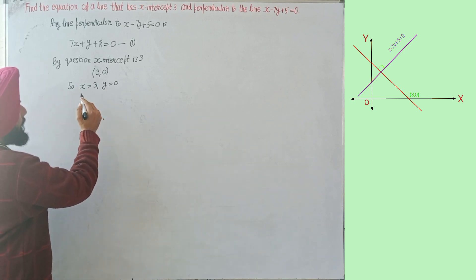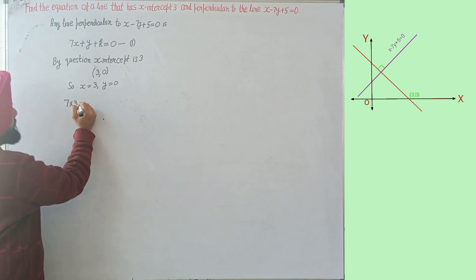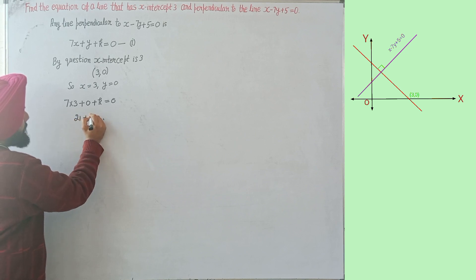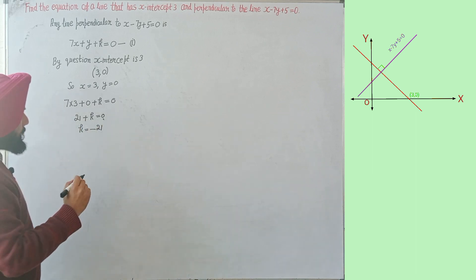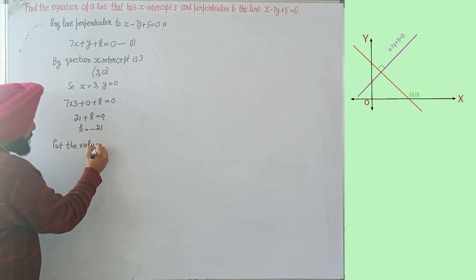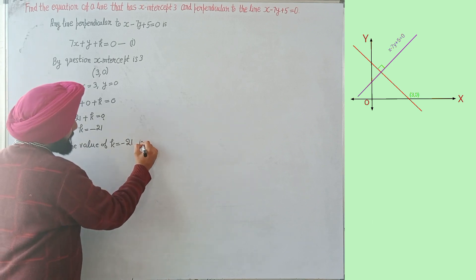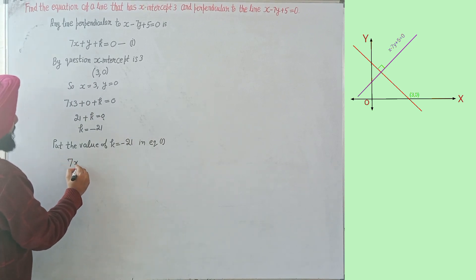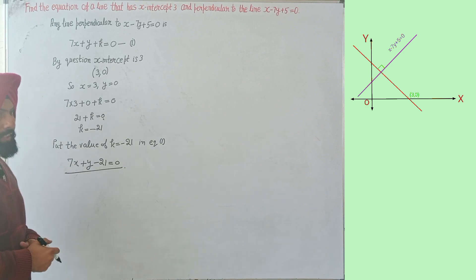Put x equal to 3 and y equal to 0 in equation number 1. What we get: 7 multiplied by 3 plus 0 plus k equal to 0. So 21 plus k equal to 0, meaning k equal to minus 21. Put the value of k equal to minus 21 in equation 1. So 7x plus y minus 21 equal to 0 is the required equation of the straight line which is perpendicular to the line x minus 7y plus 5 equal to 0.